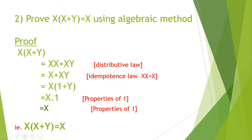By the distributive law, x into x plus y is equal to xx plus xy. What is the value of xx? By the idempotent law, x dot x is equal to x. So we convert xx to x. That gives x plus xy.